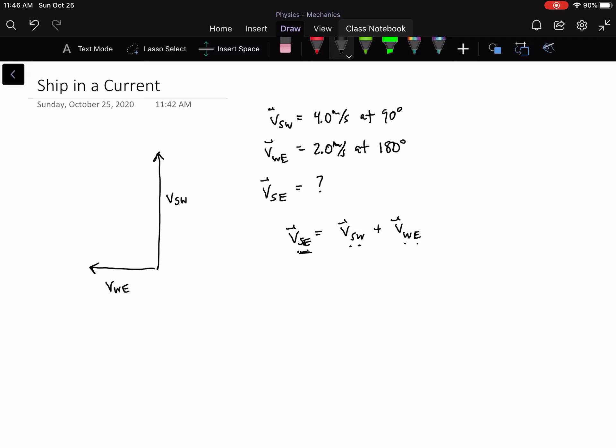Now that we have this, we know that graphically we can use the head-to-tail method. Move the other one up to here, and that's V_WE. The thing we're trying to find will connect the origin to the head of that vector. So we have the velocity of the ship relative to the Earth, and it just remains for us to calculate that.